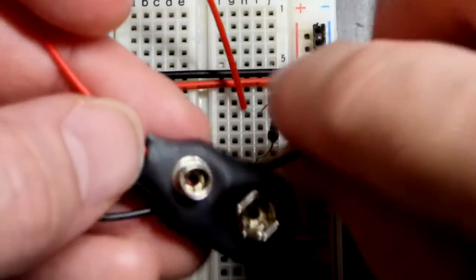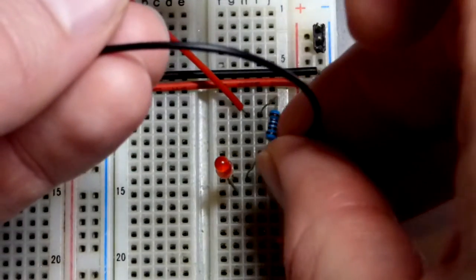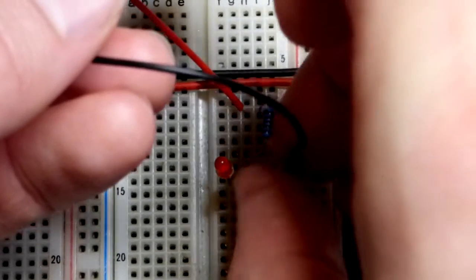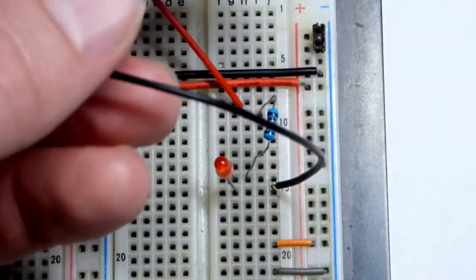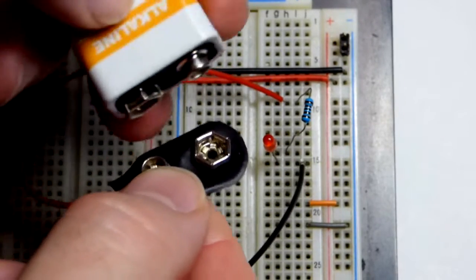Before we connect the battery to the snap, we can plug the wires into the breadboard, if that is what we are using. And finally, we just have to connect the battery.